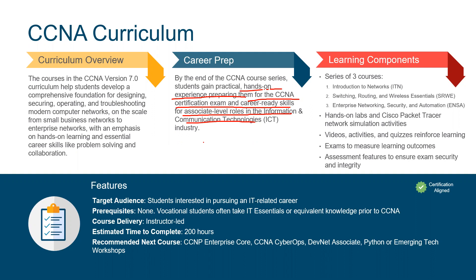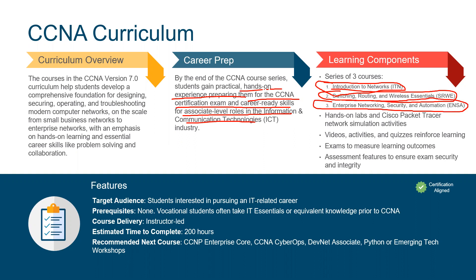This series has three courses in total. We have Introduction to Networks, which is what we're going to be looking at. We also have CCNA 2, which is Routing and Switching Wireless Essentials. Then we have CCNA 3, which is Enterprise Networking Security and Automation. Previously there were four courses, but now it has been condensed into three. There is so much new technology and updates. We're going to be looking at hands-on labs and Cisco Packet Tracer network simulation activities.